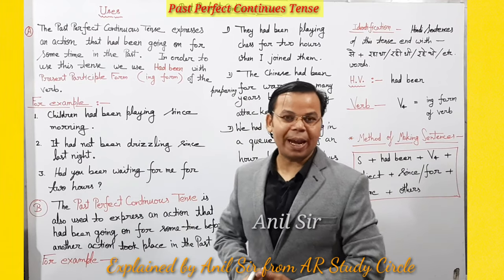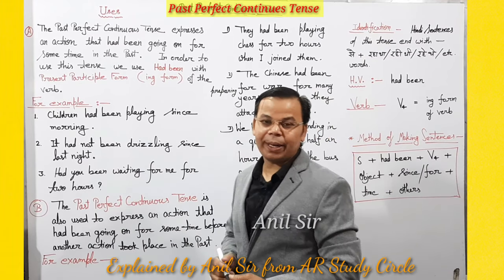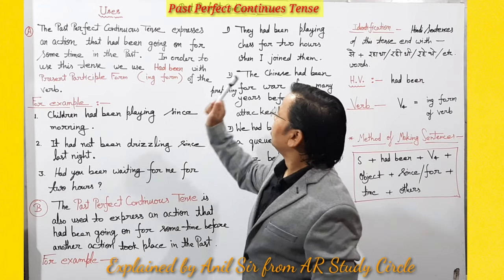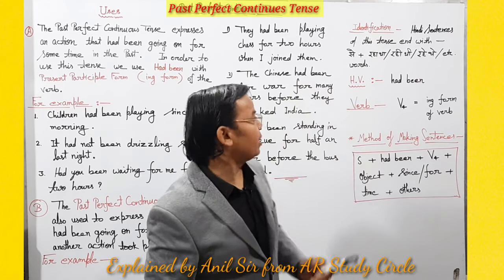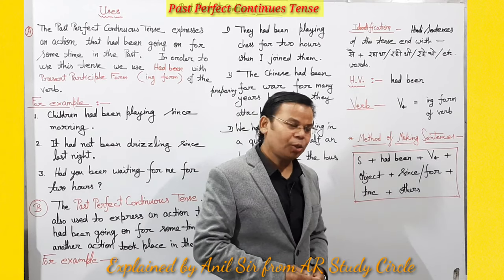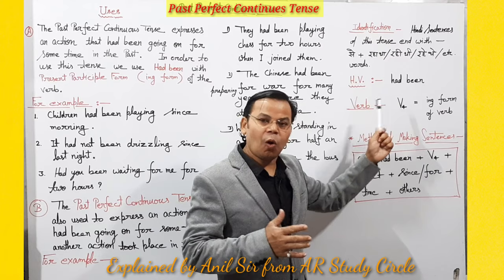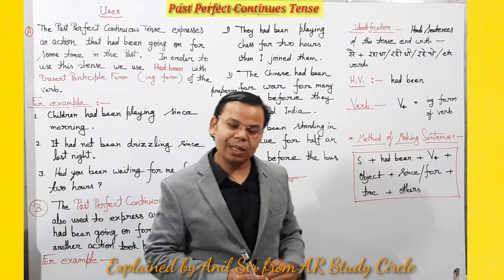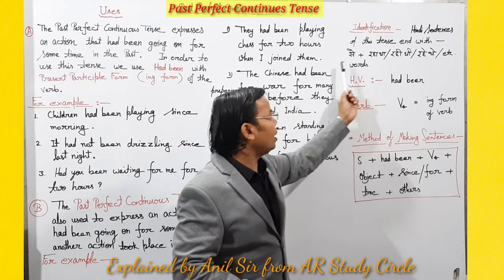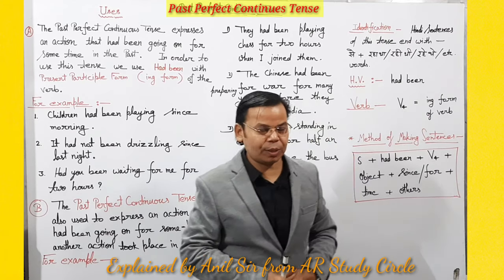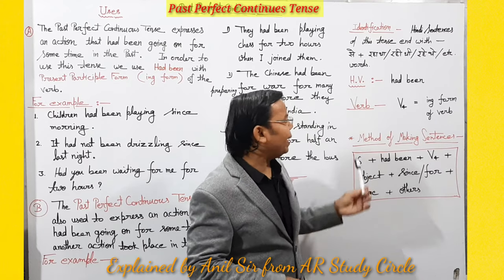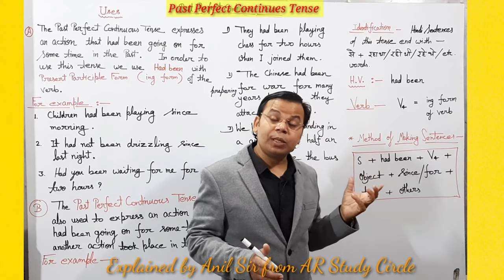Hello friends and students. Today I'm going to explain Past Perfect Continuous Tense. The identification of Past Perfect Continuous Tense: in these sentences you will find words like 'say rahata', 'say the hiti', 'say rahata' etc. The helping verb is 'had been'.